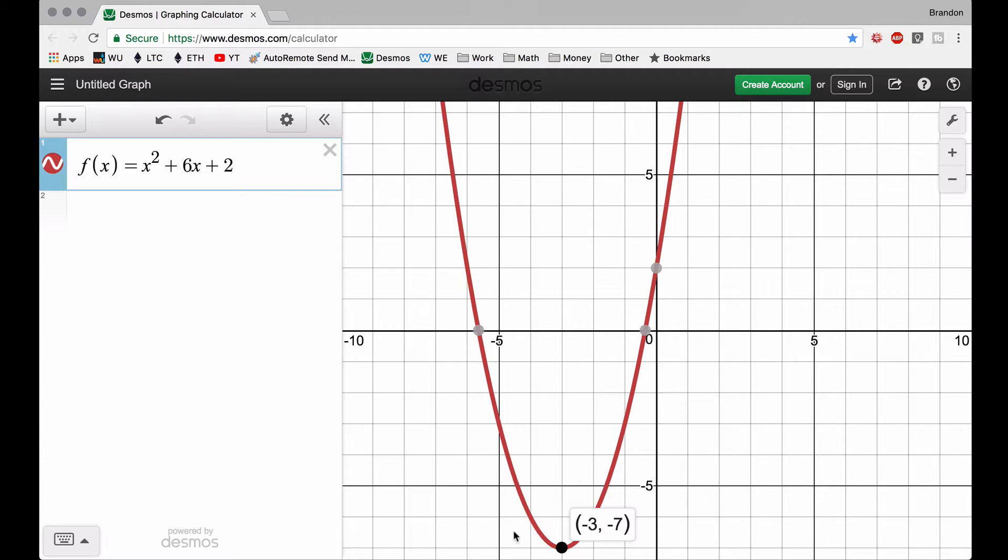This matches our interval notation. Because we said for values of x from negative infinity all the way to this -3, all these values of x from negative infinity to -3, f(x) is decreasing. And then from -3 on to positive infinity for values of x, the function is increasing. The function is going up.